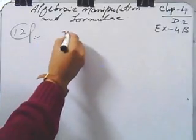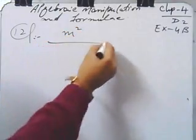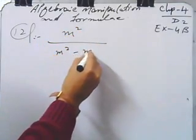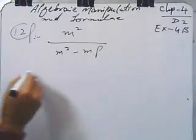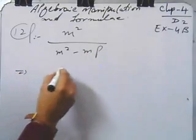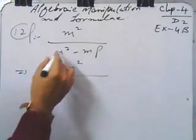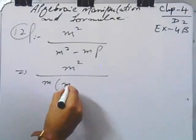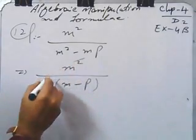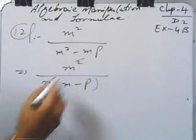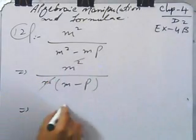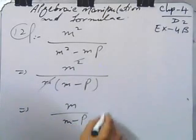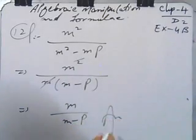Question number 12: (x² - y²) divided by (m² - mp). Take common m from the denominator to get m(m - p). Apply the difference of two squares to the numerator and simplify to get your result.